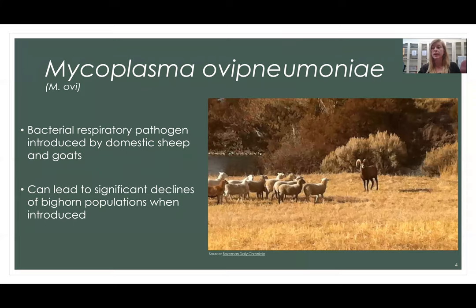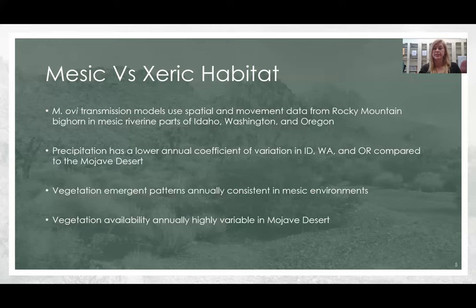As you all know, desert bighorn have been infected with Mycoplasma ovipneumoniae, a respiratory bacterial pathogen that has been introduced by domestic goats and sheep. When introduced to a desert bighorn population, it can lead to significant population declines.